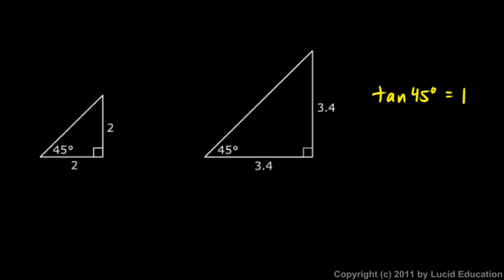The size of the triangle doesn't matter — it's the ratio we care about. Learn that the tangent of 45 degrees equals 1, but don't simply memorize it. Make sure you understand why: by the definition of the tangent function, it's opposite over adjacent, and for a 45-degree angle the opposite and adjacent are always the same, so the tangent must be 1 every single time.